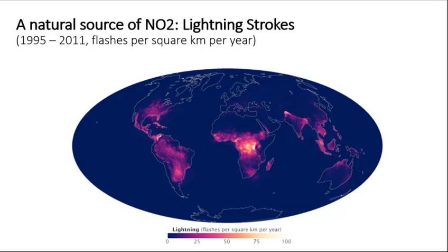Nitrogen dioxide, however, also has some natural sources. Among these are lightning strikes. The strong source of heat within lightning converts some of the N2 in air into NO2. A map of the frequency of lightning strikes around the world, expressed in the number of lightning strikes per square kilometer per year, is shown. So in understanding air pollution, it is important to appreciate that an air pollutant gas can be formed due to both anthropogenic and natural processes. Formation of nitrogen dioxide within the combustion chamber of a motor vehicle is one example of an anthropogenic source of NO2, while lightning is one example of a natural source.